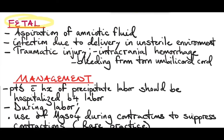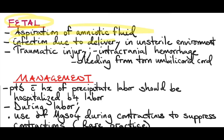Fetal complications of a precipitate labor include aspiration of amniotic fluid. Remember that when the baby is descending, some of the fluid is pushed out of the lungs, but in a precipitate labor there is not enough time for this, so the baby aspirates the amniotic fluid. There is also a risk of infection due to delivery in a non-sterile environment, like delivery at home.